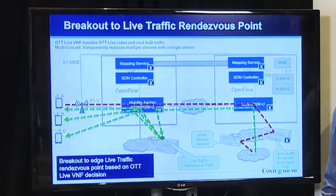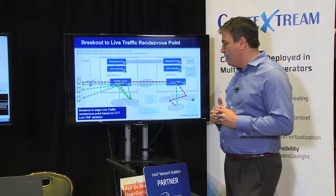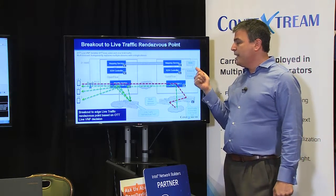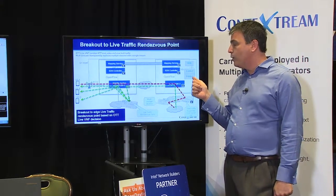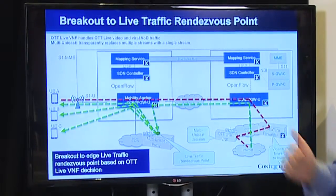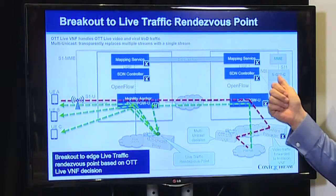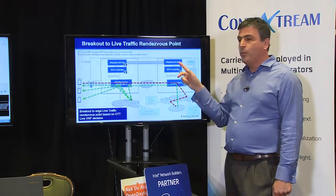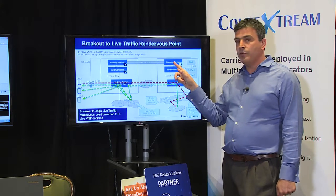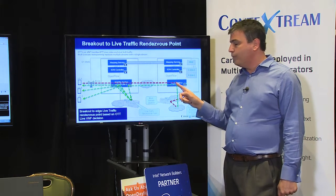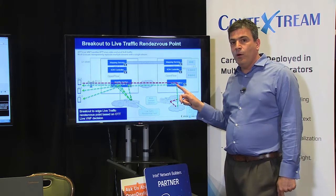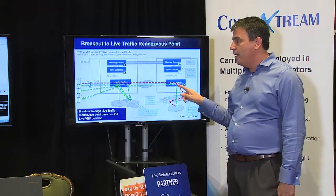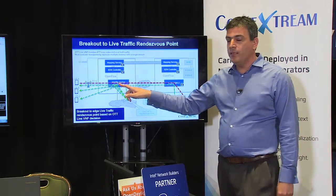Now I'm going to show you the demonstration. We have the main anchoring point here with the S-Gateway and P-Gateway control done by Mavineer. It goes to the MME and pushes to the mapping service and the broker controller, configuring the open flow switches that do the data path on the central side. In addition, we push it at the edge.